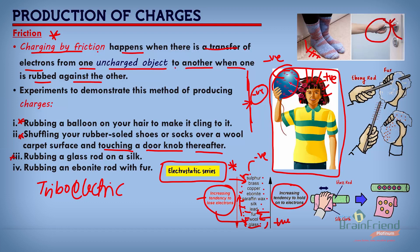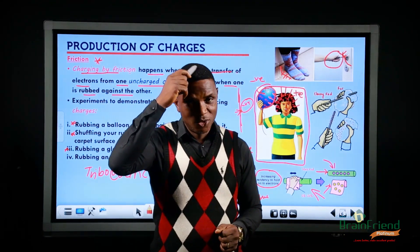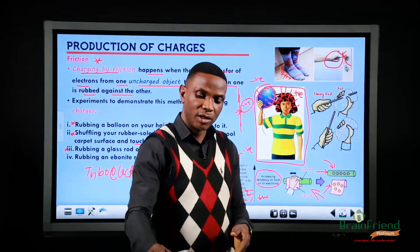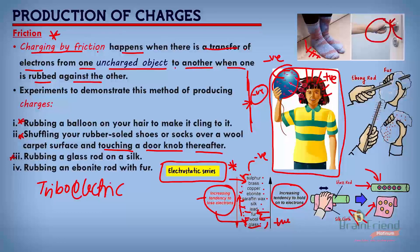Another way is rubbing a glass rod on silk. When you rub a glass rod on silk, the rod becomes positively charged and the silk becomes negatively charged. The glass rod loses electrons and becomes positively charged, while the silk material becomes negatively charged. If you raise that glass rod over some sand particles, you will see it attracting those particles — the glass rod has become charged. Similarly, you can take a pen, quickly rub it on your hair, then hold it over little slices of paper. You'll find the pen attracts and can lift those little bits of paper.